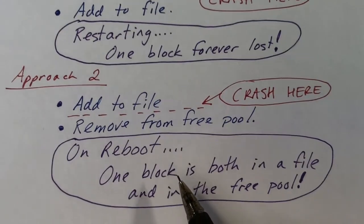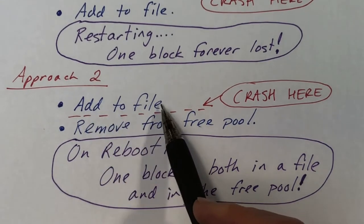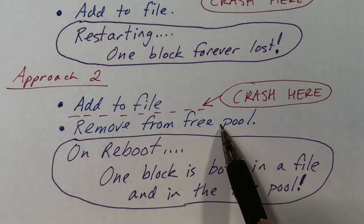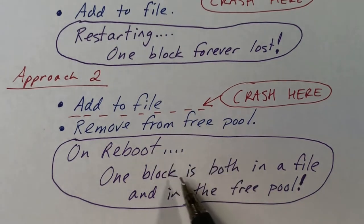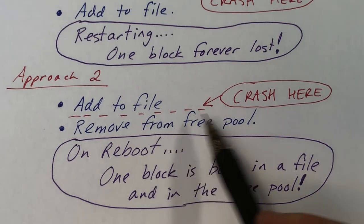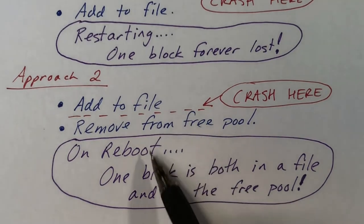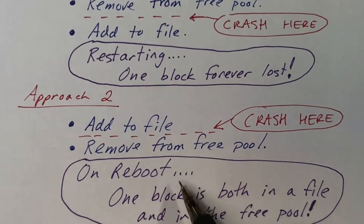Maybe we can reverse the order and add the block to the file first — perform the write that updates the file data structure — and then update the free pool to indicate we've allocated a block. But if the crash occurs after the first write, we've got a different problem: a block that's still in the free pool yet has already been added to a file. One block is both in a file and in the free pool — that's a disaster. So neither of these two approaches works.